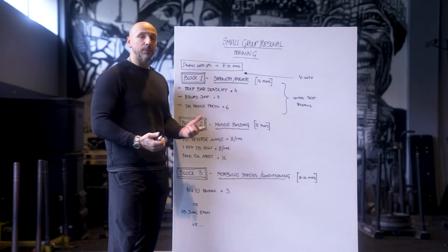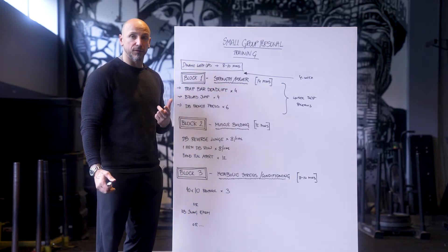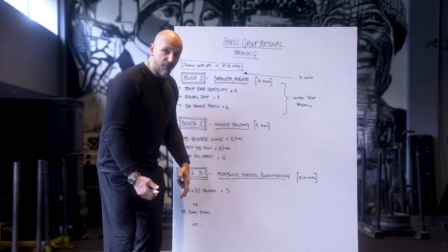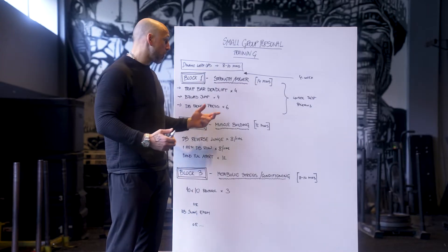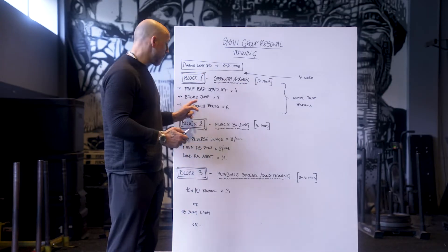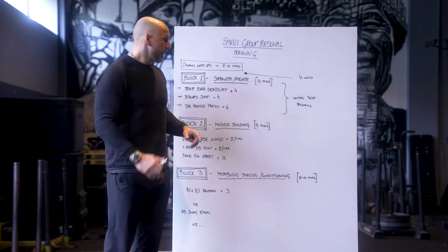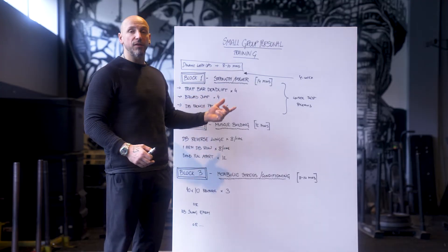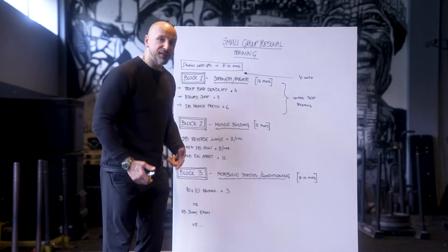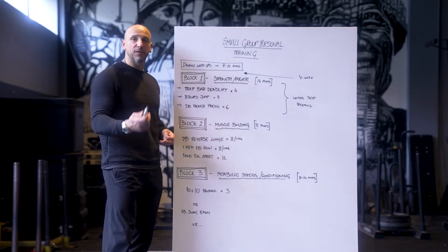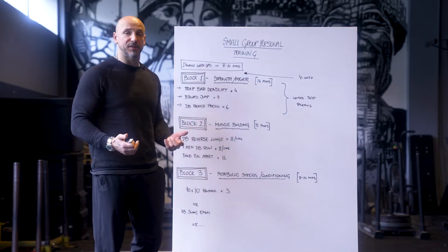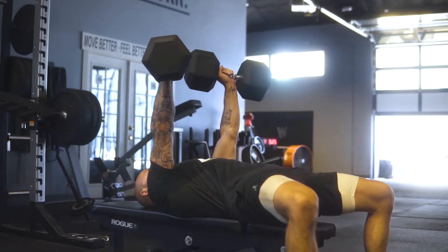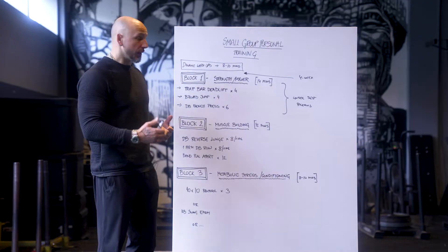For example, let's say somebody can do 250 pounds for a set of four. They would probably go 135 for a set of four, then put on some more weight. Only in that first round, they'd go do a set of four, put on more weight to 165, do a set of three, then go do broad jumps. Their first set of broad jumps, they'd do them at 70%. Then they go do dumbbell bench press, do a set of six, a ramp up set, maybe 70% of the load.